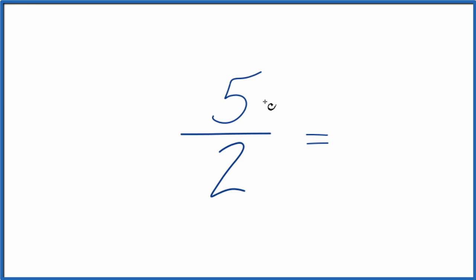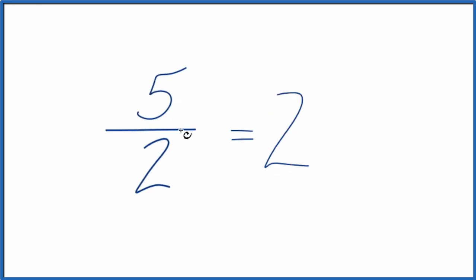First, we could divide 5 by 2. 5 divided by 2 is 2, and then we'd have one left over. That would be our remainder. So we write our remainder and put that over 2.